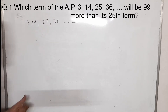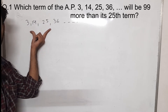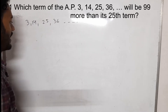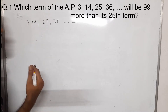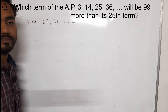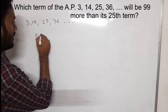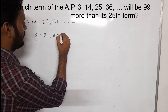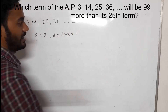So here we have an AP, and in this AP we have to find the term which is 99 more than its 25th term. So here A will be 3, D will be 14 minus 3, that is 11.